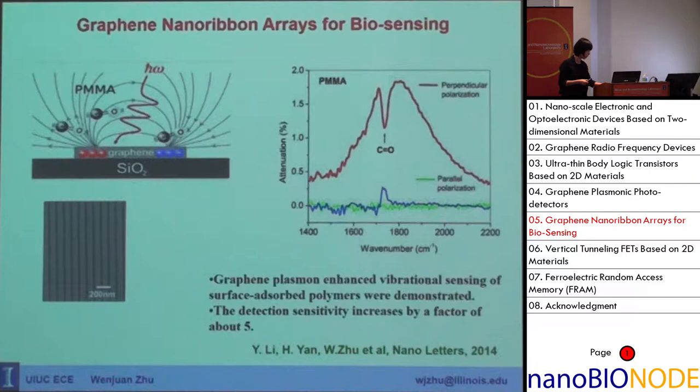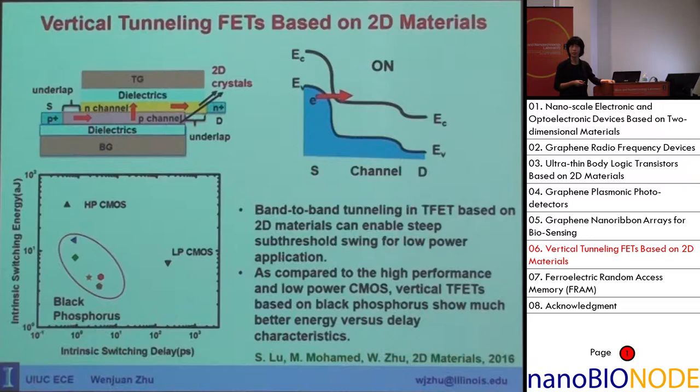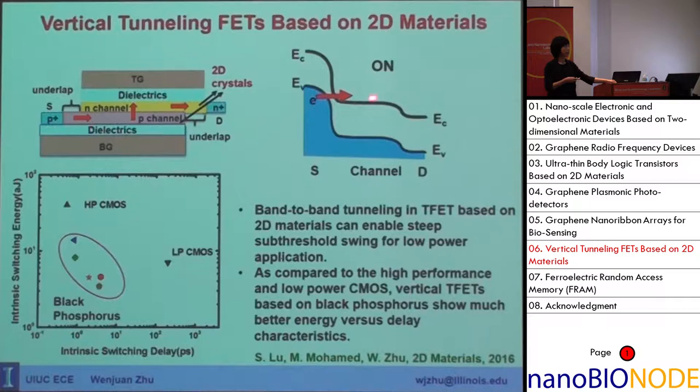The fifth type of device we are investigating is tunneling transistors. These use 2D material stacks forming a heterostructure with top gate, bottom gate, source, and drain features. Unlike traditional transistors based on diffusive transport from source to drain, tunneling devices are based on band-to-band tunneling.